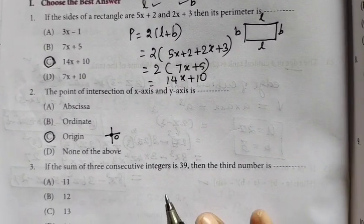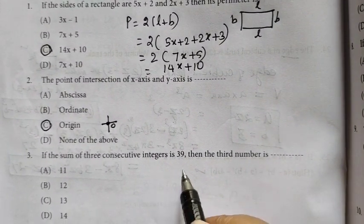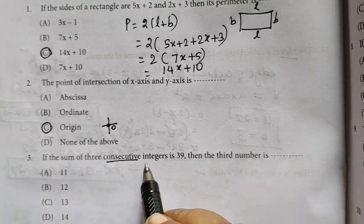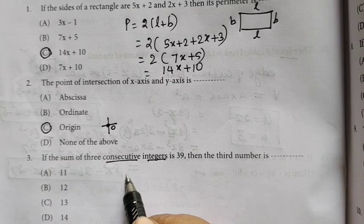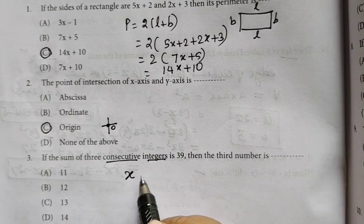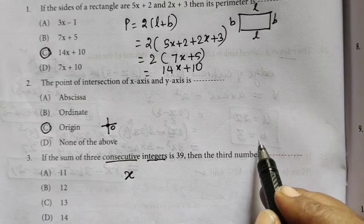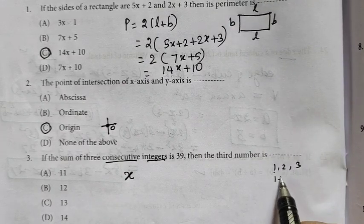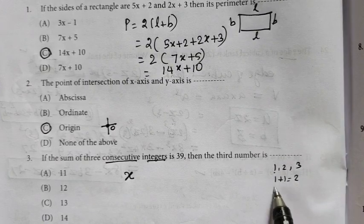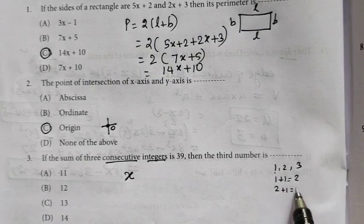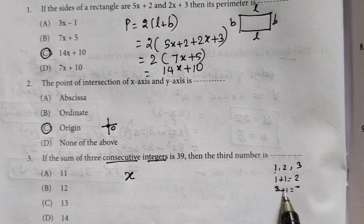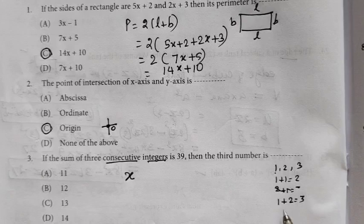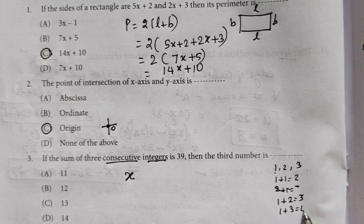If the sum of the 3 consecutive integer is 39, then the third number is. Let the first number be x. Next number is x plus 1. 1, 2, 3. 1 and 1 is equal to 2. 2 and 1 is equal to 3.